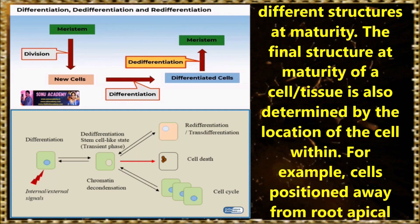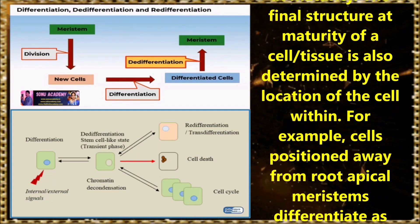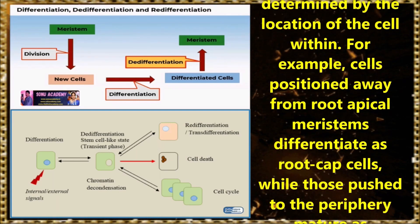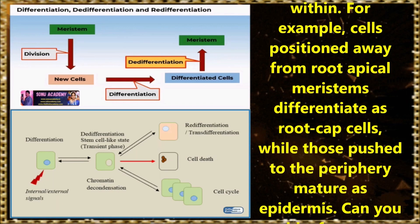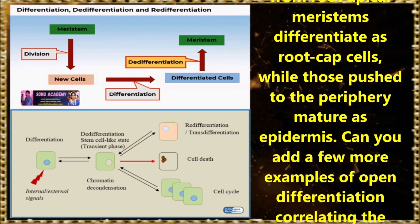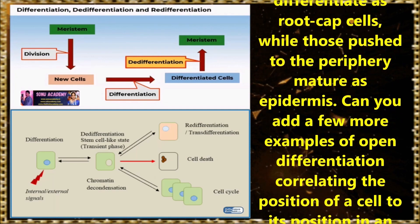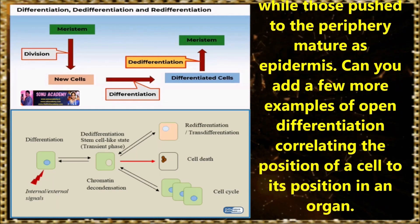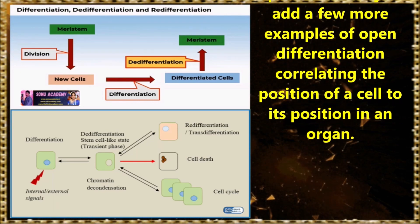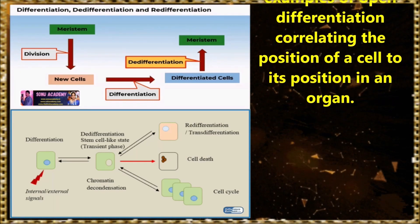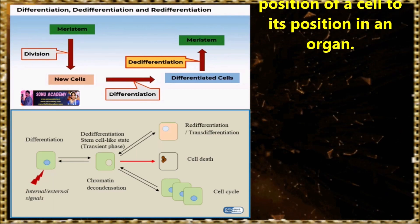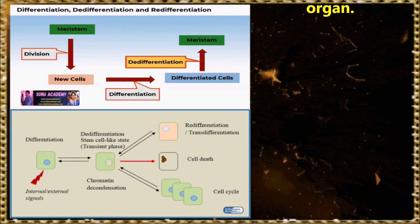Because the cells and tissues arising out of the same meristem have different structures at maturity. The final structure at maturity of a cell or a tissue is also determined by the location of the cell within. For example, cells positioned away from the root apical meristem differentiate as root cap cells, while those pushed to the periphery mature as epidermis. You can add a few more examples of open differentiation correlating the position of a cell to its position in an organ.